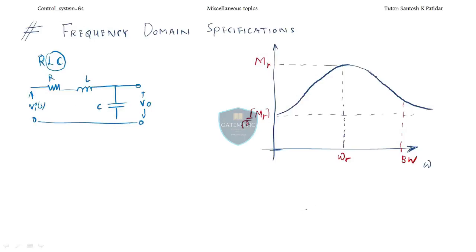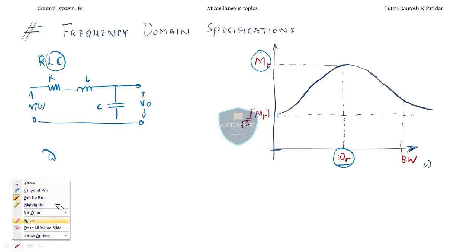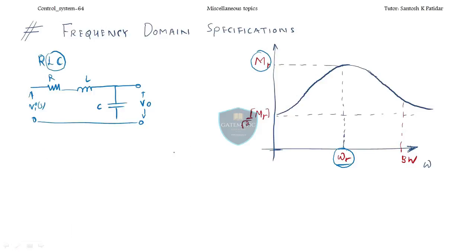You studied this in network theory also. The output characteristics show that at omega R — the resonance frequency — you get the maximum magnitude. In the control system, everything is validated with respect to this diagram. Do the analysis, find the transfer function of the second order system, and equate it. You will get zeta — the damping ratio — equal to R divided by 2 times the square root of C by L for the series RLC circuit.